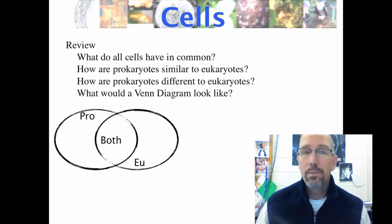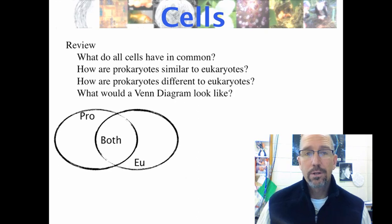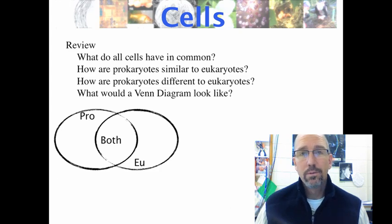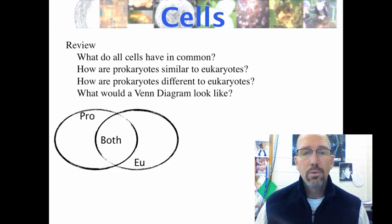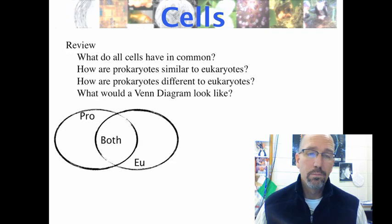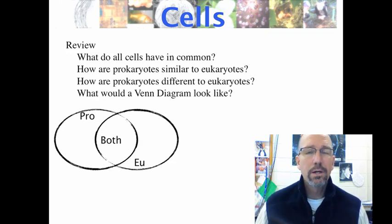Let's review. What do cells have in common? Cytoplasm and cell membrane. How are prokaryotes similar to eukaryotes? They have cytoplasm and a cell membrane. How are prokaryotes different? Prokaryotes are missing the nucleus and don't have membrane-bound organelles. If you were to put that into a Venn diagram — prokaryotes, eukaryotes, and both — you could organize your thoughts that way. Cells have things in common, but there are also a lot of differences between these kinds of cells.